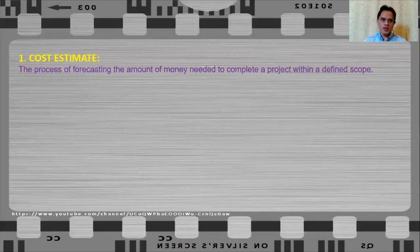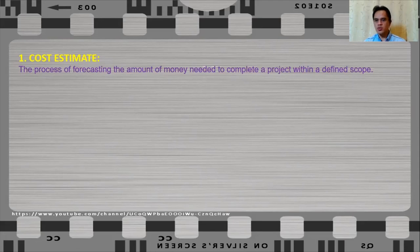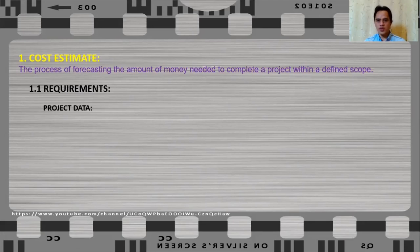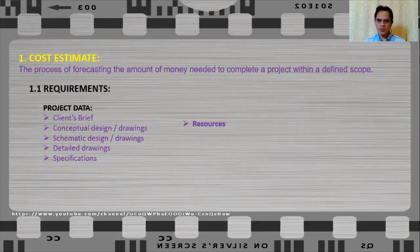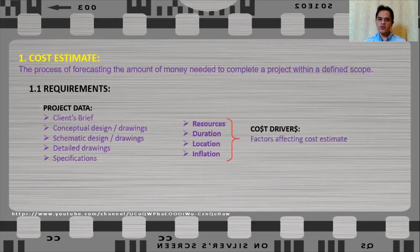To begin with, let us define a cost estimate as a process of forecasting the amount of money needed to complete a project within a defined scope. In order to carry out a cost estimate, you must have project data. This may include any or all of the following: the client's brief, a conceptual design, schematic design, detailed drawings, and specifications. You also have to consider several factors such as the resources, the duration of the project, the location of your project, and inflation. These are only a few of the factors that will affect your cost estimate, or what are called the cost drivers.